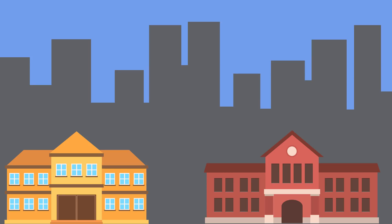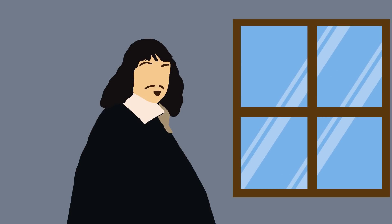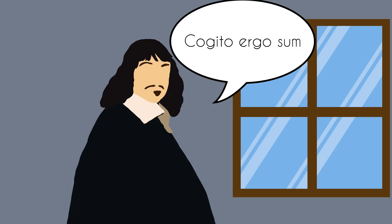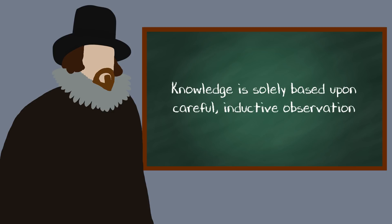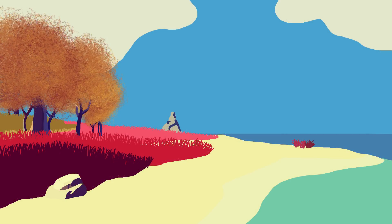As dark as these times were, a few sparks of illumination could be found. The formal birth of two very important epistemological schools of thought marked this era. René Descartes came up with a form of almost radical skepticism known as Cartesian doubt. He rejected any claim he had even the slightest suspicion about and was left with the one he is famous for: cogito ergo sum, or 'I think, therefore I am.' Because of his belief that truth can only be discovered through reason, he is considered the father of rationalism. Francis Bacon, on the other hand, as the father of empiricism, argued that knowledge is solely based upon careful, inductive observation. The Age of Enlightenment illuminated the darkness of ignorance and popularized science. Education was more accessible than ever.